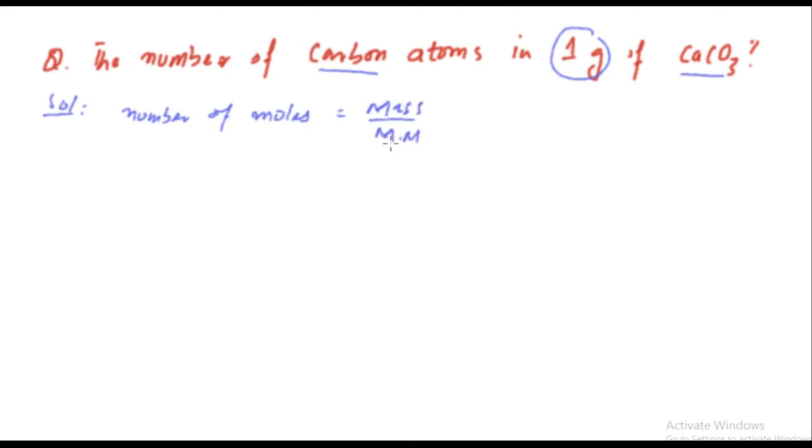We have to find out the molar mass for calcium carbonate. Calcium has atomic mass 40, carbon 12, and oxygen has 16. We have 3 oxygen atoms, hence we have to multiply this with 3.